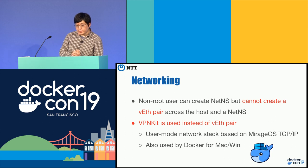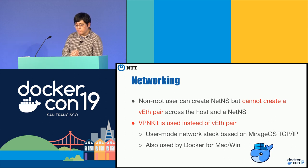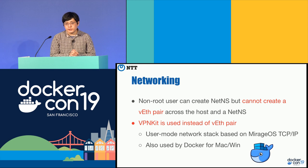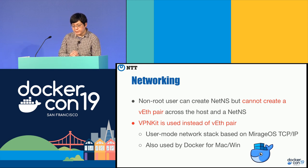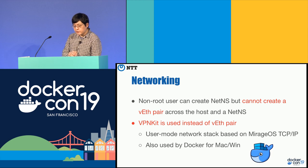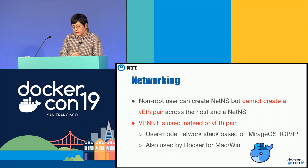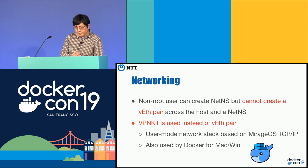Networking also has some issues. A non-root user can create network namespaces but cannot create a veth pair across the host and the network namespace. So currently we use VPNKit instead of a veth pair. VPNKit is a user-mode implementation of TCP/IP based on MirageOS source code, and it's already used by Docker for Mac and Docker for Windows.